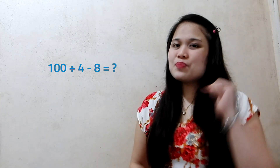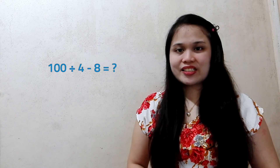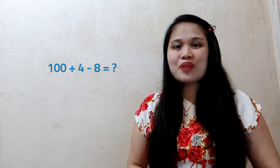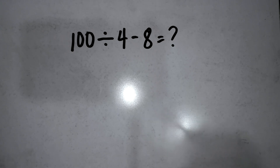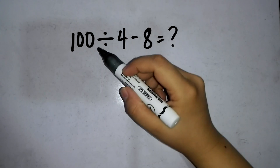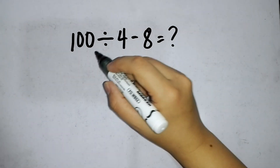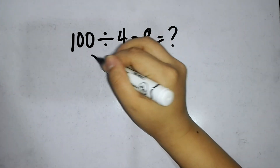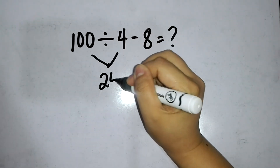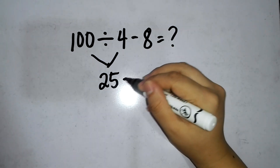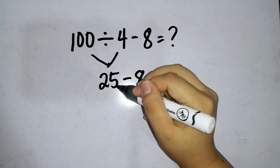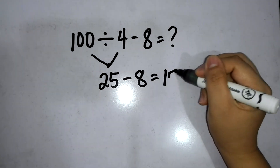How about this? What are the operations you can spot in this expression? We see division and subtraction. Which operation will we perform first? We will start with division followed by subtraction. Let's divide 100 by 4 first. The quotient will be 25. Then subtract 8 from 25. So the final answer will be 17.